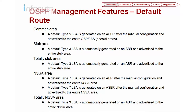For stub areas and totally stub areas, the default Type 3 LSA is automatically generated on the ABR and advertised to the entire stub areas. For the totally stub area as well, the Type 3 is automatically generated on the ABR to the entire stub areas. So these two are automatically generated — when the areas belong to stub areas, the default route is auto-generated.